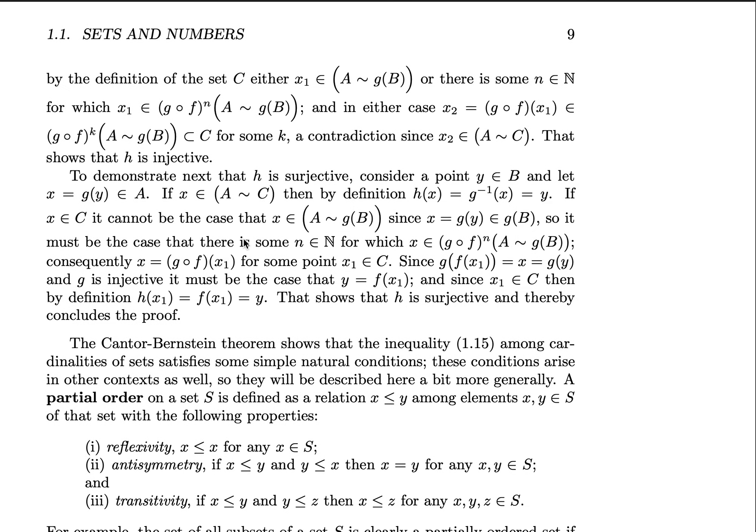To demonstrate that it is surjective, let's consider a point y in B, and that x equal to g(y) is an element of A. Well, there are a couple of cases for what x can be. If x is in A except for C, then h(x) is equal to g⁻¹(x) equals y. And we're done, because we know that those are subsets of B.